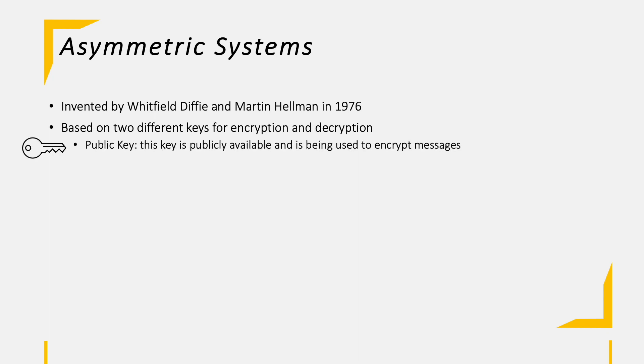The public key is, as the name already says, publicly available. This key is used to encrypt messages. On the other side we have the private key, which always must be kept private. This key functions as the decrypting key for messages, which are sent to me and were encrypted with my public key.